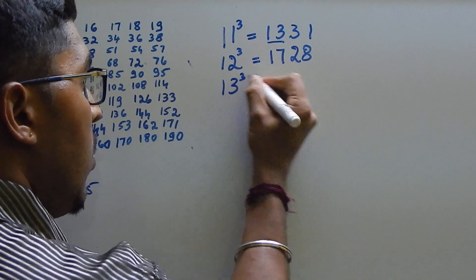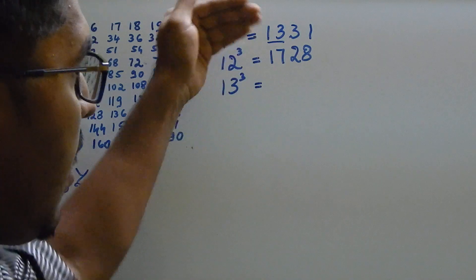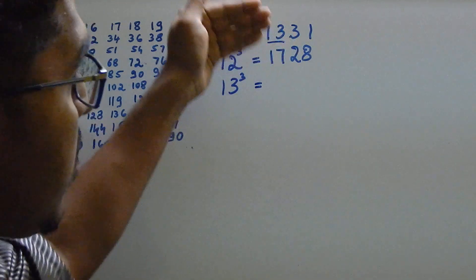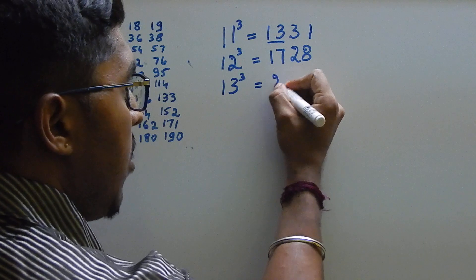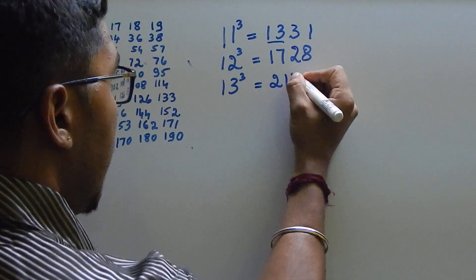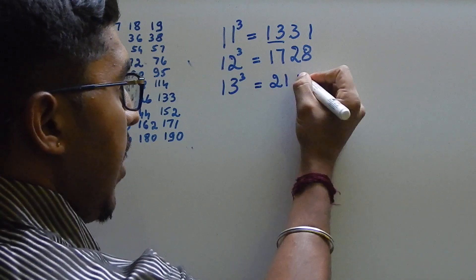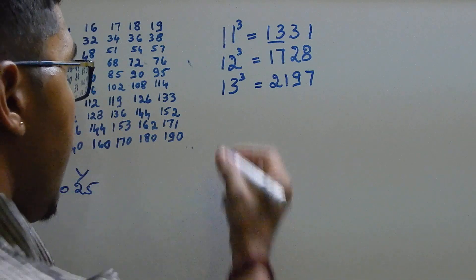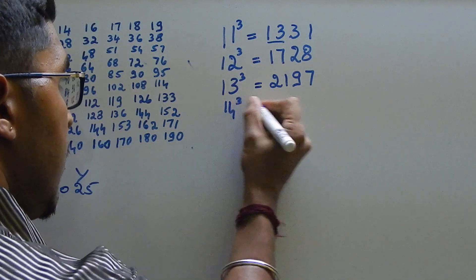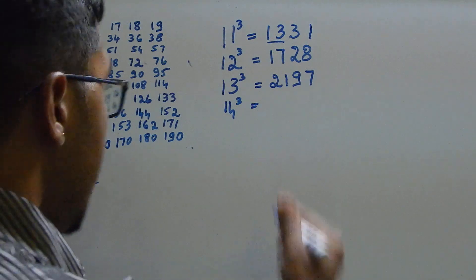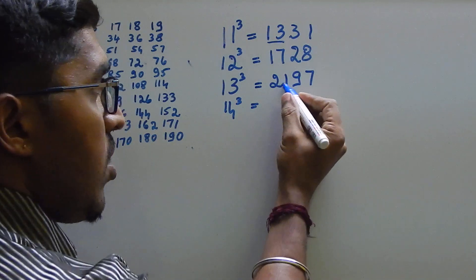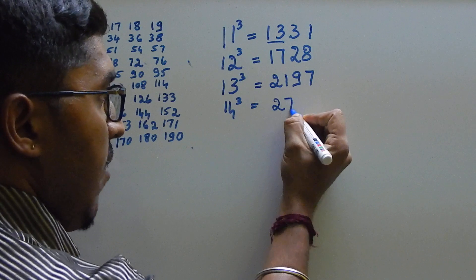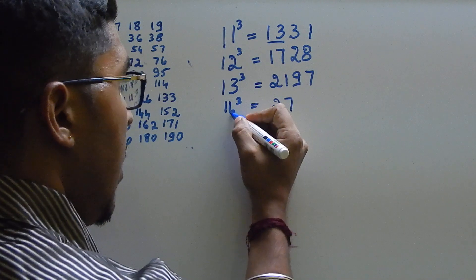Next is 13 cube. How much it will be? 21. Then, add 90 to 17. 97. Next, 14 cube. How much? 14 cube is? Add 6 to 21. That is 27. Then, here it is 44.